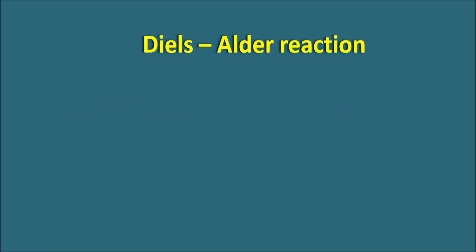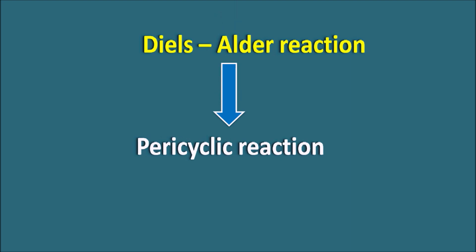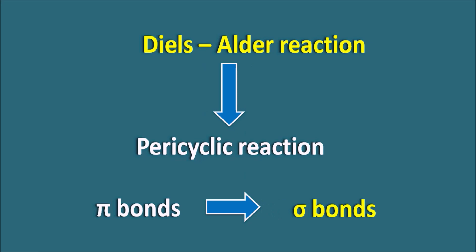Hi everyone. Today in this video we are going to discuss the Diels-Alder reaction. This is one type of pericyclic reaction. Pericyclic reactions are a group of reactions where electrons are delocalized or rearranged — for example, pi bonds can be rearranged into sigma bonds, or pi electrons can be delocalized to another position. This rearrangement and relocation of electrons is initiated by a supply of energy. Today we will see how this reaction takes place and how the product is formed.